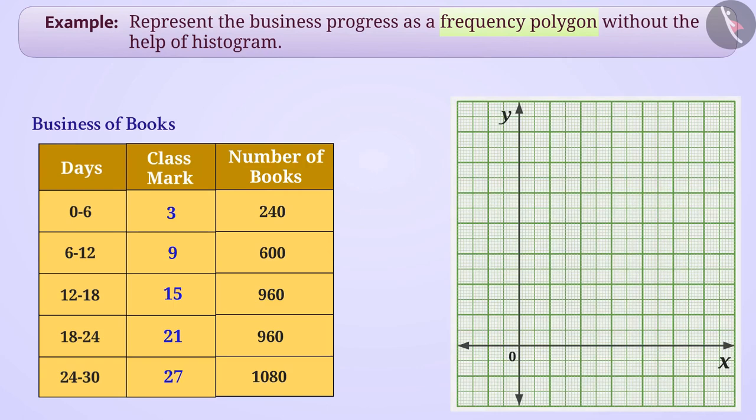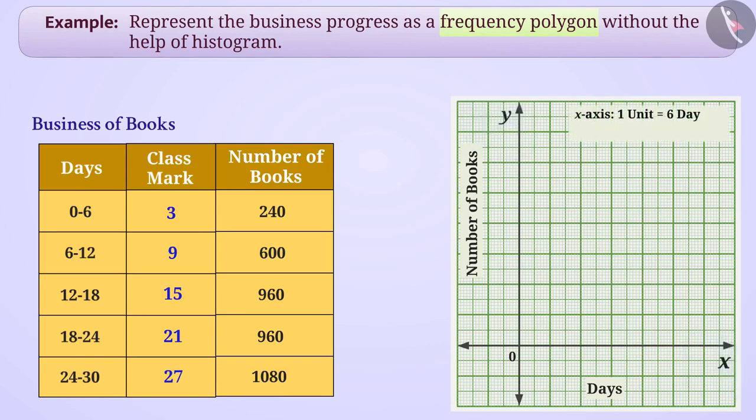Now we will represent class intervals on x-axis (days) and frequency on y-axis (number of books). For this, we have to choose the appropriate scale on each axis. We can take 1 unit equals 6 days on the x-axis and 1 unit equals 240 books on the y-axis. We will then denote the class mark and their frequency of all the class intervals from the points B, 3 and 240...